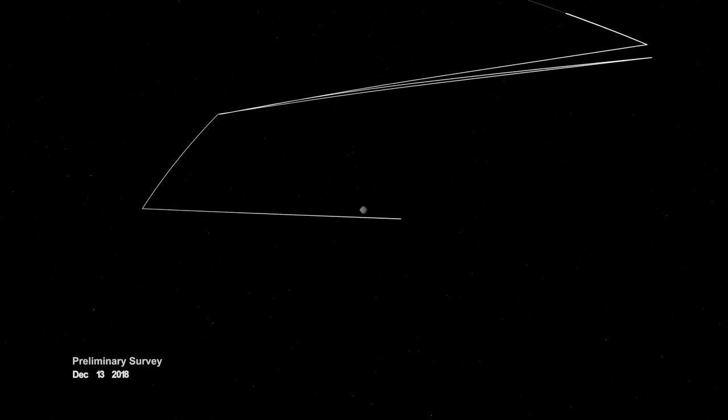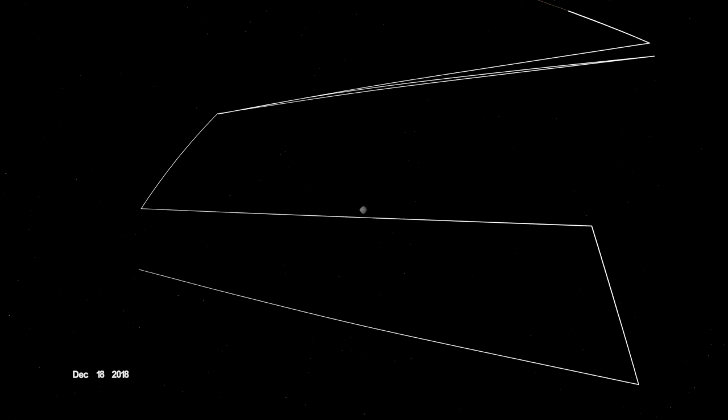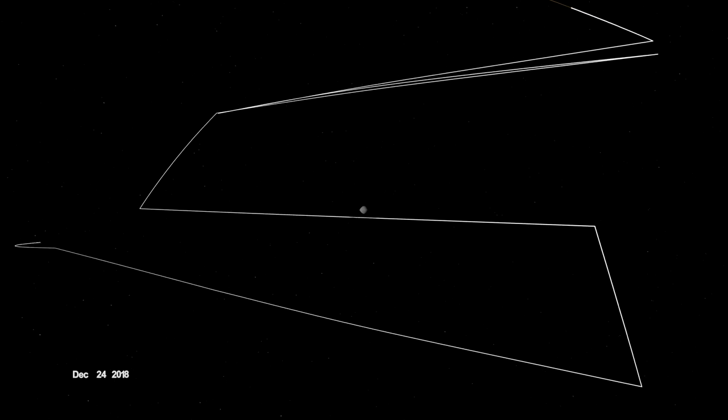When OSIRIS-REx arrived, it began wrapping Bennu in a complex web of observations, starting with a preliminary survey of its size, shape, mass, and spin.